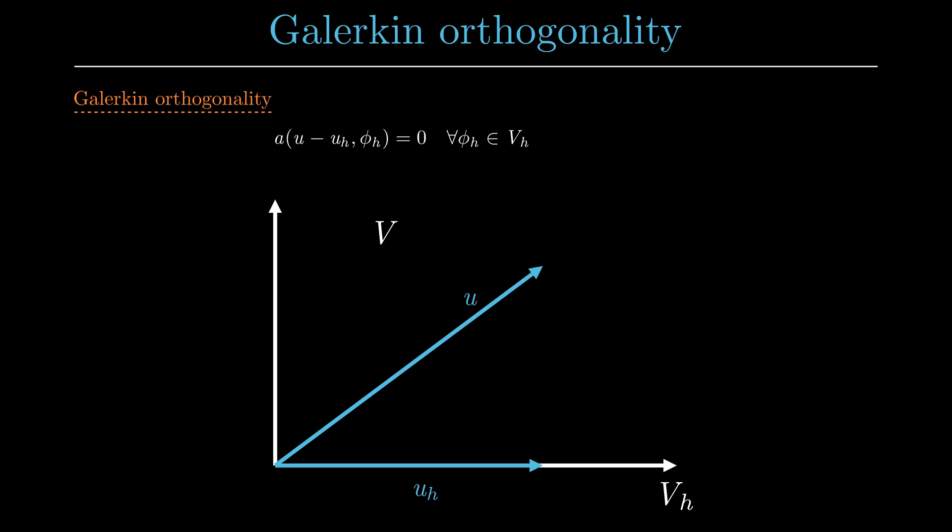The difference of these solutions, the red vector u minus uₕ, is then orthogonal in the bilinear form a to all functions φₕ, which are located on the horizontal axis.